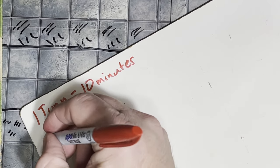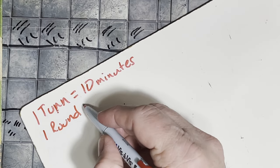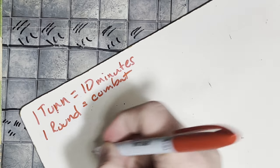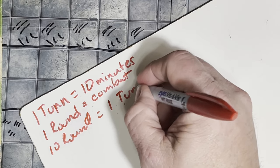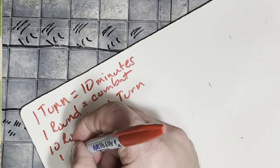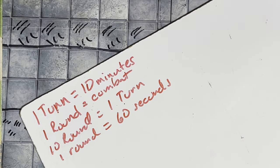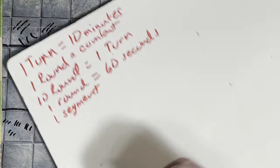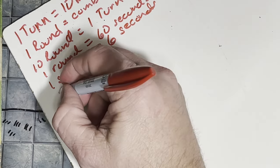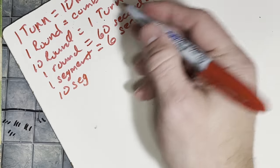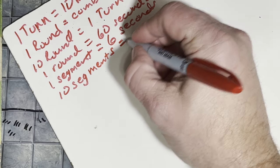But when you get into combat, all that kind of slows down. Instead of being a turn, you call it a round. So a round is what you call it in combat. And a round is the equivalent, or 10 rounds is the equivalent of one turn. So that means that each round is a minute or 60 seconds. So one round is 60 seconds. Now you can divide a round up into a segment. So a segment is just 6 seconds. And of course there's 10 segments in a round.